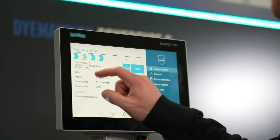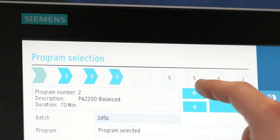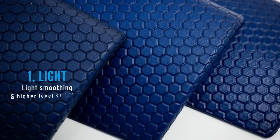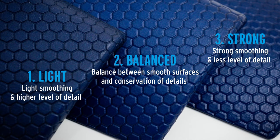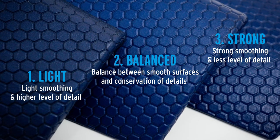Validated and specially developed programs for all common materials are available and ready to use. We've developed three levels of smoothing: light, balanced, and strong to be able to adapt all process parameters individually for your application. This ensures flexibility and a seamless integration with existing production processes such as the dimension printed product workflow.